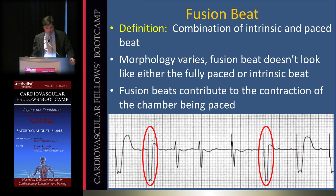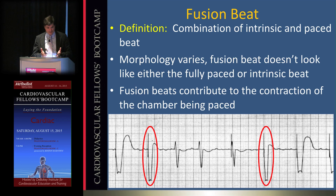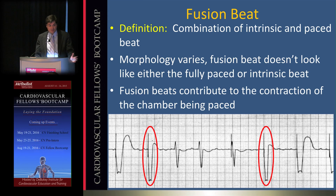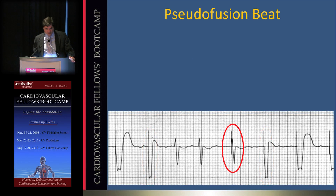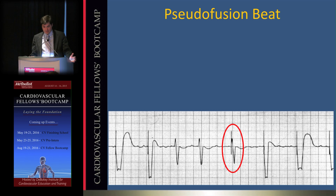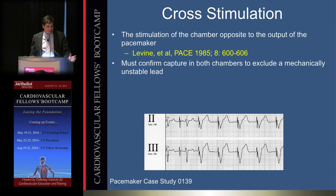A fusion beat occurs when a ventricle or atrium is depolarized simultaneously from two sources — one intrinsic and one paced — producing a morphology that blends both. A pseudofusion beat looks like a fusion beat but the pacing stimulus falls on an already-depolarizing chamber and does not actually contribute to depolarization; the beat looks fully intrinsic even though a pacing spike is visible.